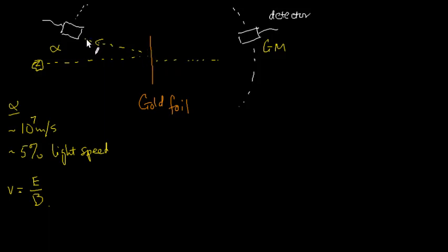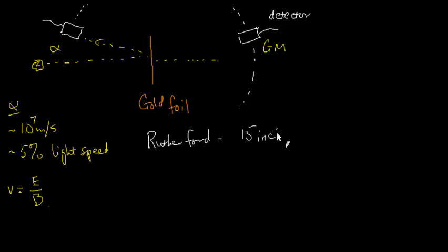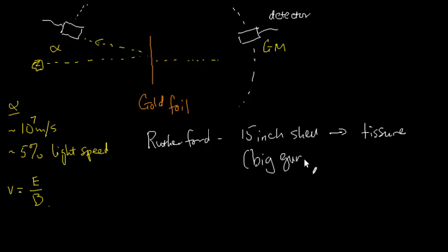In Rutherford's own words, it was like shooting a 15-inch shell at a piece of tissue paper and having the shell bounce right back. A 15-inch shell is basically a very big gun. So it was hard to believe — like a piece of cake pushing a bullet aside. The obvious explanation is that there must be something very hard inside the atom.